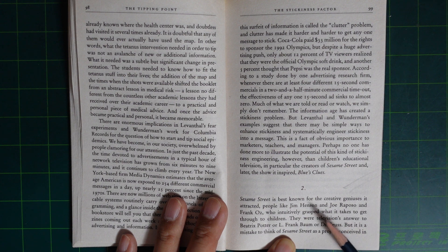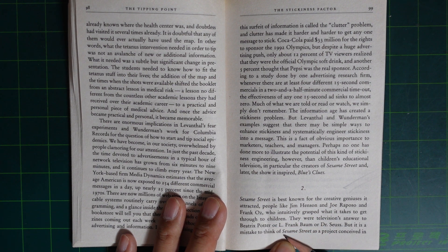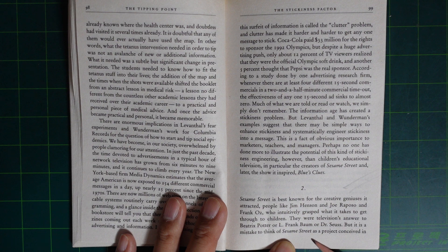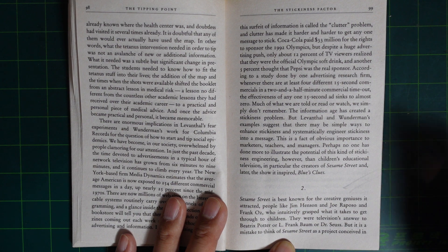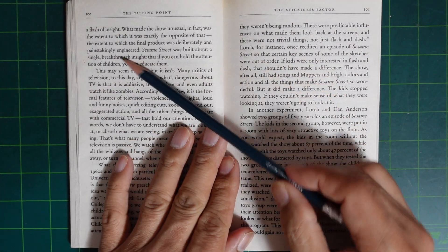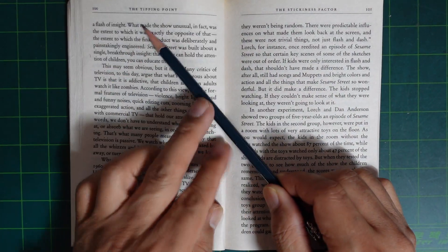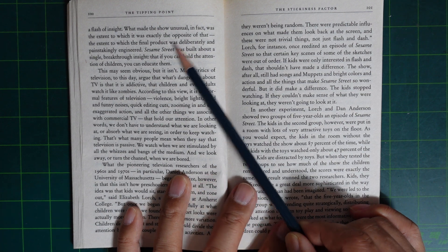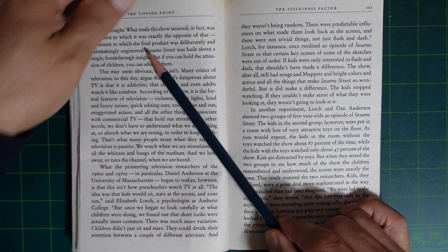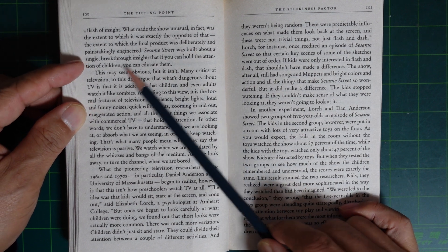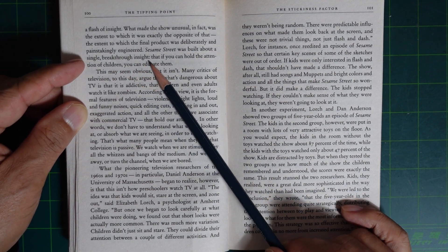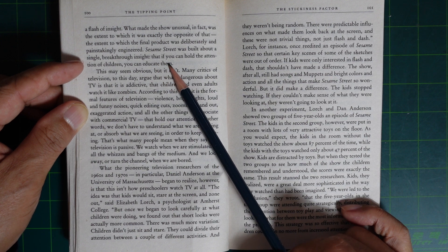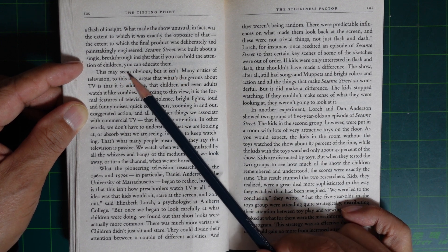They were television's answer to Beatrix Potter or L. Frank Baum or Dr. Seuss. But it's a mistake to think of Sesame Street as a project conceived in a flash of insight. What made it so unusual was the extent to which the final product was deliberately and painstakingly engineered. Sesame Street was built about a single breakthrough insight: that if you can hold the attention of children, you can educate them.